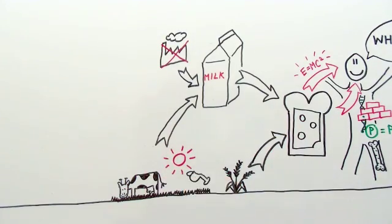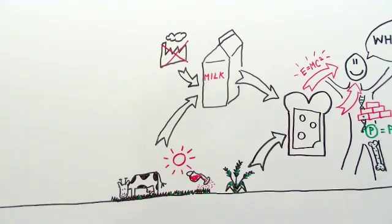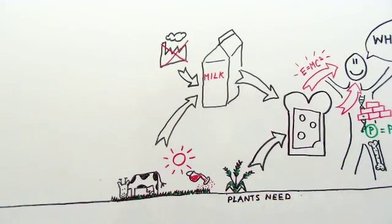Wheat and grass grow naturally, thanks to the sunlight and water. But also because of nutrients such as phosphorus, which plants need as much as you do.